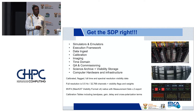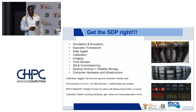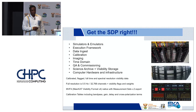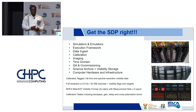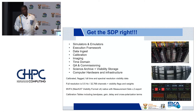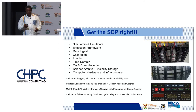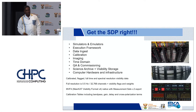Now the science data processor. Get the SDP right — that has been the only thing on my mind for the last five years. These are the basic components: we produce simulators and emulators because this telescope didn't exist and we simulated it as we went along. We have an execution framework, and the SDP is a chain of tools to get to the data. We have a data ingest which takes in a few hundred gigabits per second; at the end of our process we're looking at something like 20 gigabits per second — a significant reduction.